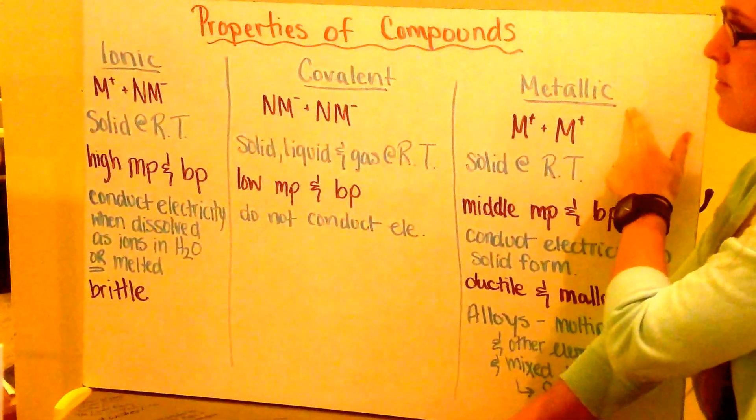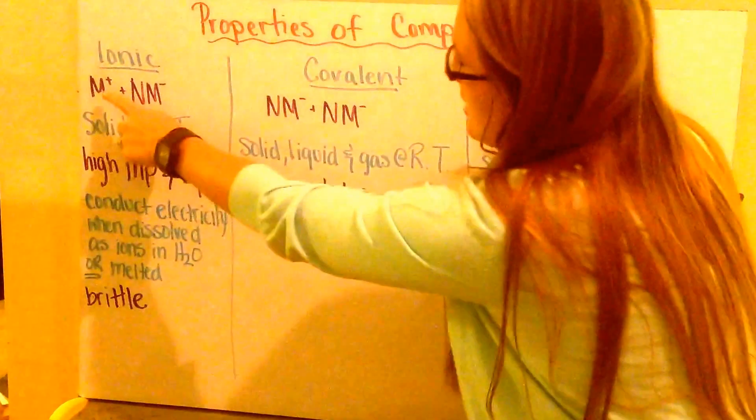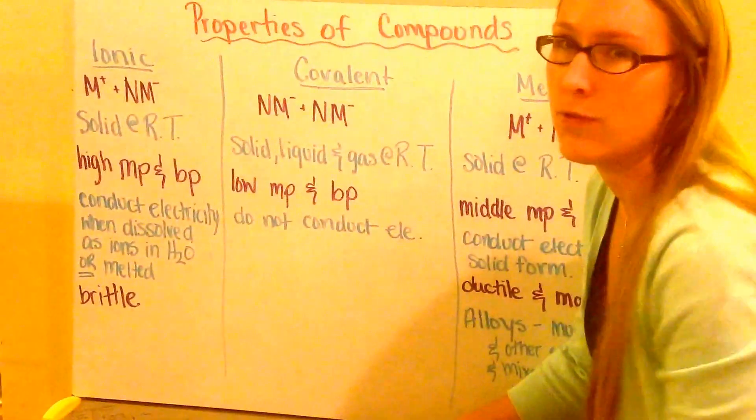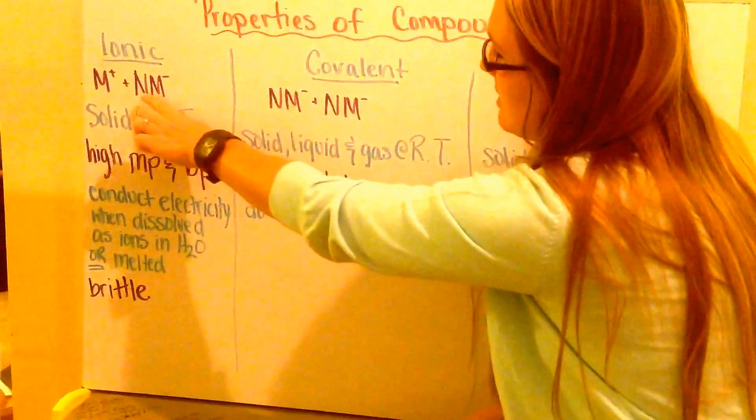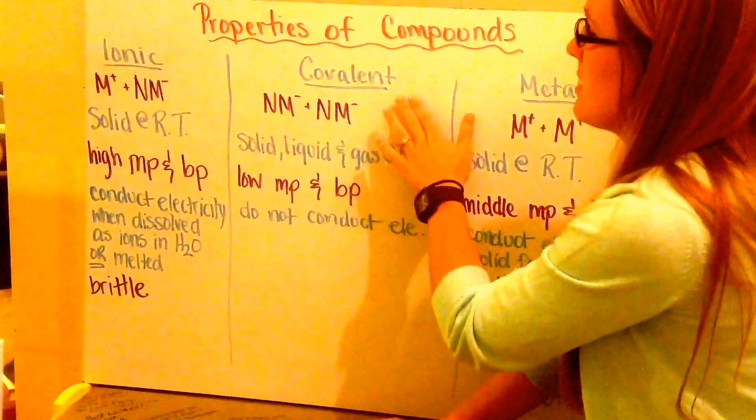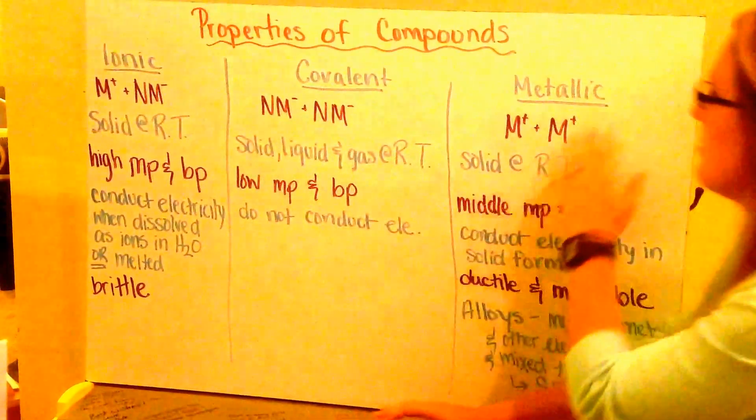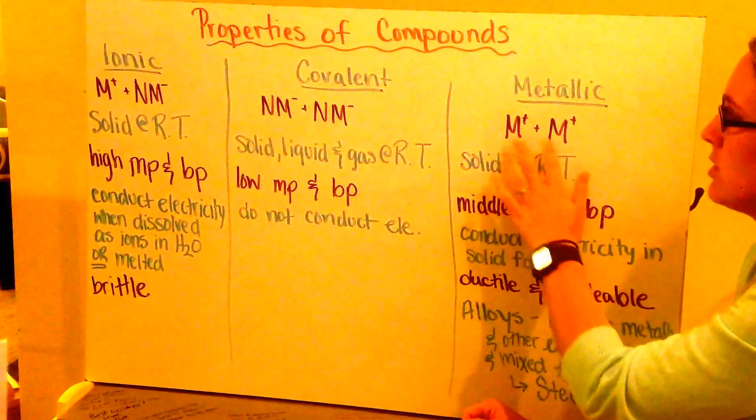or a metallic compound. Ionic compounds are composed of metals and nonmetals, which we abbreviate as M+ for metals because they form cations, and nonmetals as NM- because they form anions. Covalent compounds are between nonmetals and nonmetals, and metallic compounds are between two metals.